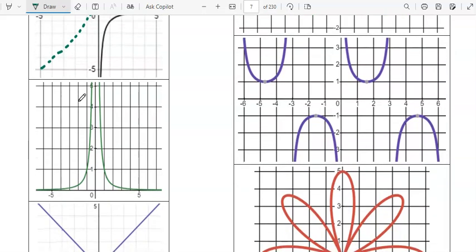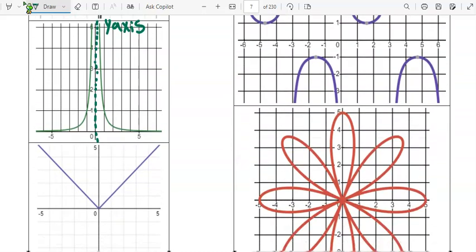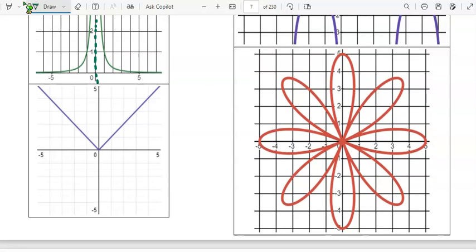On this rational even, we have a line of symmetry going down the y-axis. And on this absolute value graph, we also have a line going down the y-axis for a line of symmetry.